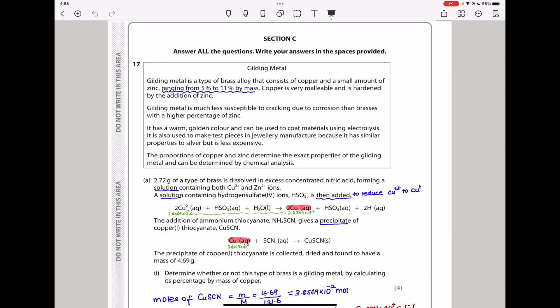Question 17. Gilding metal is a type of brass alloy that consists of copper and a small amount of zinc, ranging from 5% to 11% by mass. Copper is very malleable and is hardened by addition of zinc. Gilding metal is much less susceptible to cracking due to corrosion than brasses with a higher percentage of zinc. The proportions of copper and zinc determine the exact properties of the gilding metal and can be determined by chemical analysis.